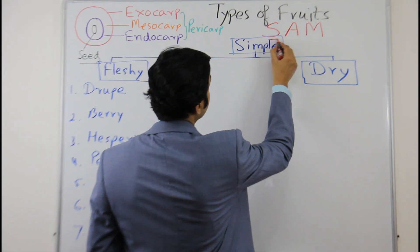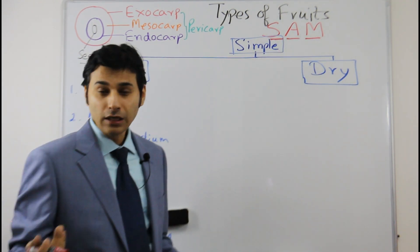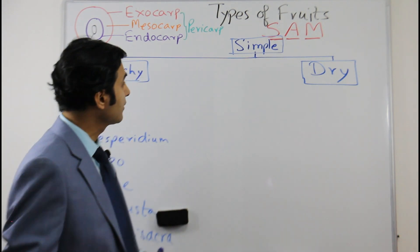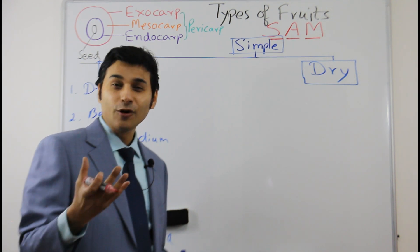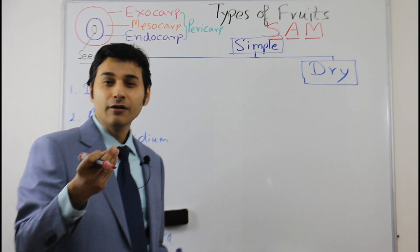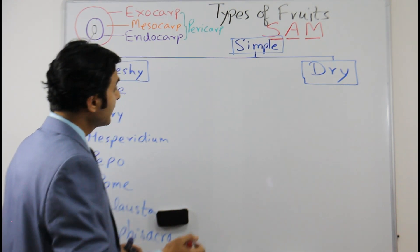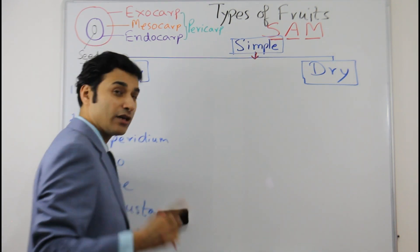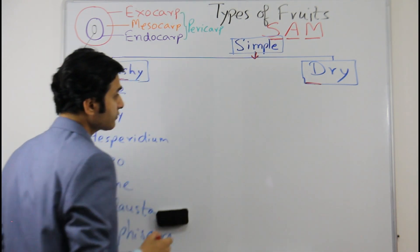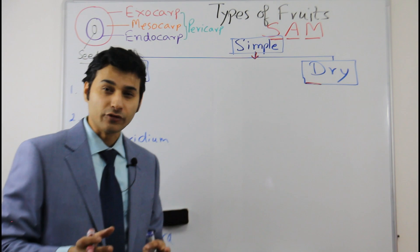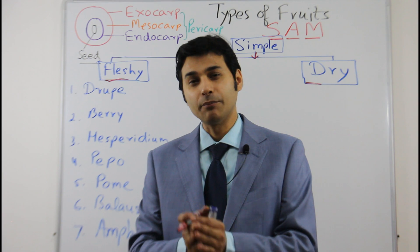I gave you the keyword SAM: Simple, Aggregate, and Multiple. You can visit my old videos in the playlist on my channel to find the easy way I described to remember all the types of simple fleshy fruits. A simple fruit develops from one flower and one ovary, and is of two types: fleshy and dry.